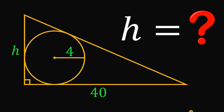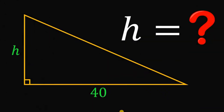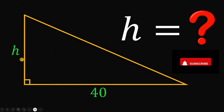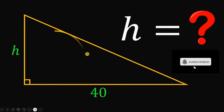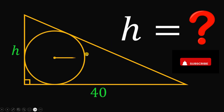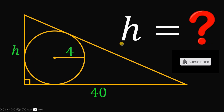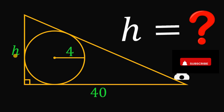Can you solve this geometry challenge? Here's the question. Given a right triangle with side lengths h and 40, draw a circle inside the triangle with a radius equal to 4 units. The question is: what is the measure of side length h? You can pause this video if you want to give this problem a try.